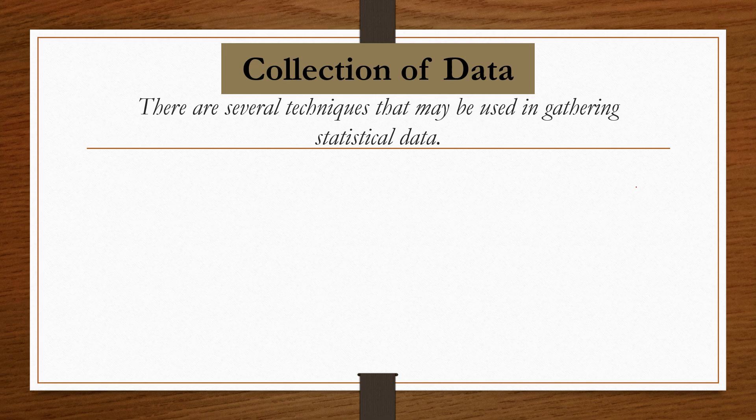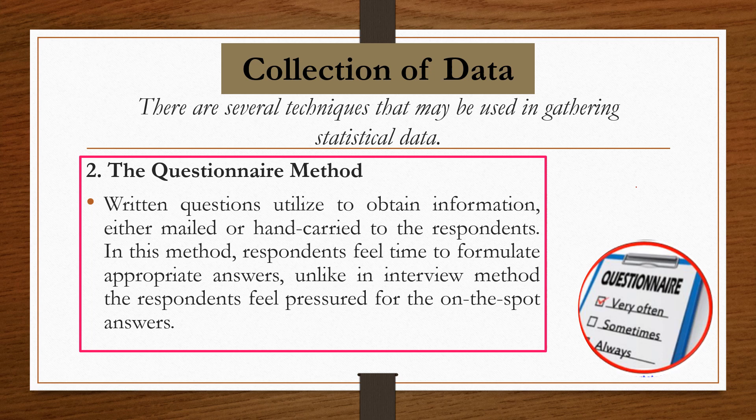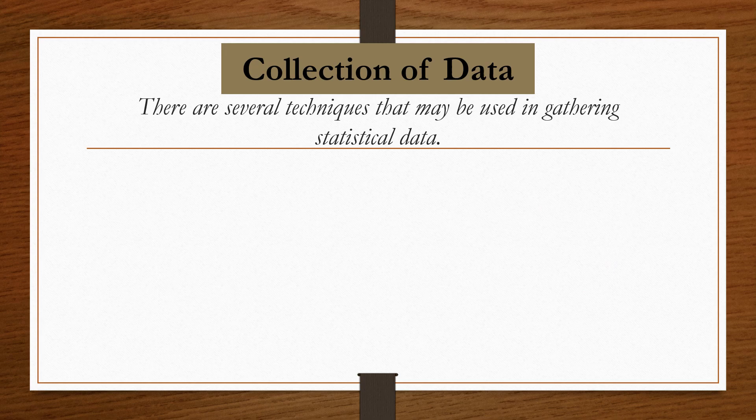The second technique is the questionnaire method. Written questions utilized to obtain information, either mailed or hand-carried to the respondents. In this method, respondents feel time to formulate appropriate answers, unlike in interview method wherein the respondents feel pressured for on-the-spot answers. For example, students are asked to answer the evaluation form to rate their teachers in different criteria. That is an example of questionnaire method.